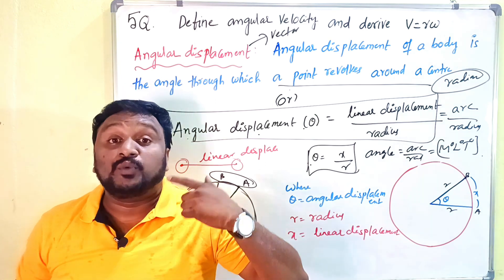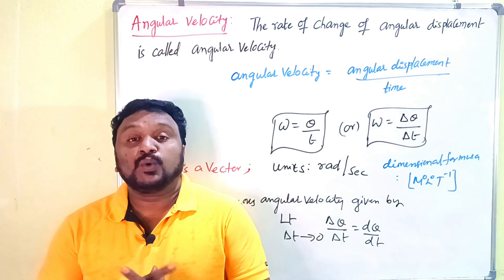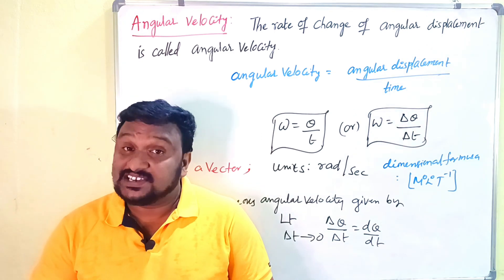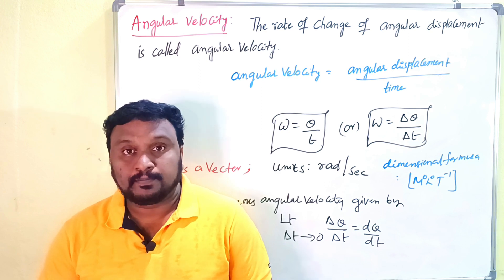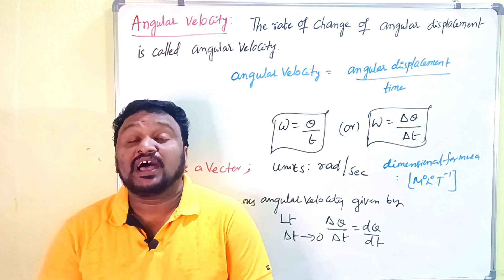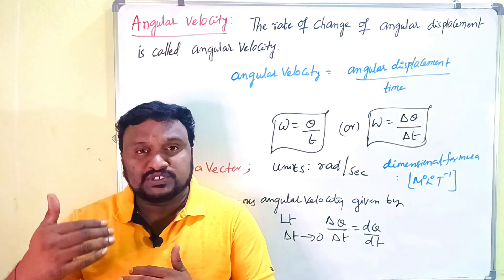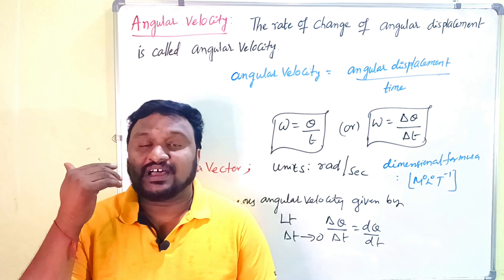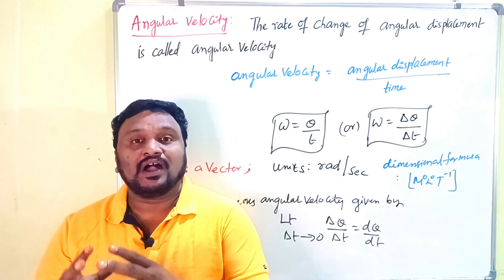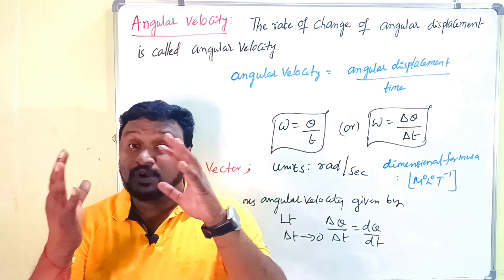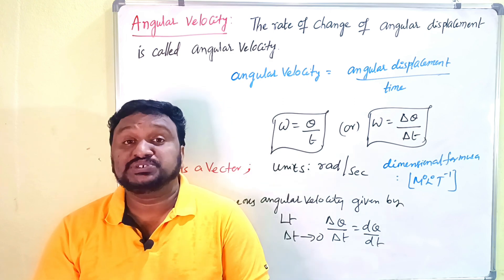Now let's define angular velocity. The rate of change of angular displacement is called angular velocity. Angular velocity is a vector quantity and has the same dimension formula as frequency. Just as in linear motion the rate of change of displacement is called velocity, here the rate of change of angular displacement is called angular velocity. Angular velocity is shown with the symbol omega.